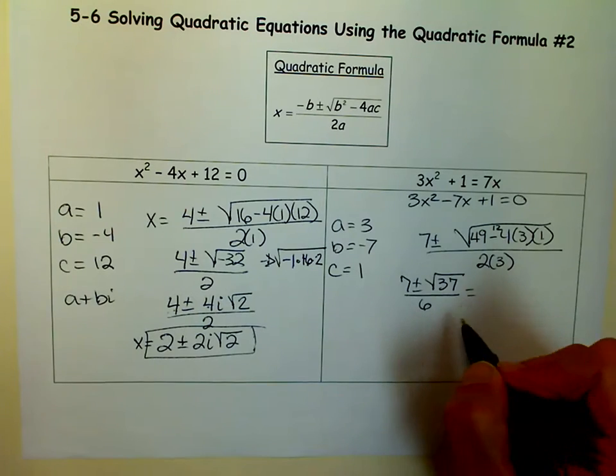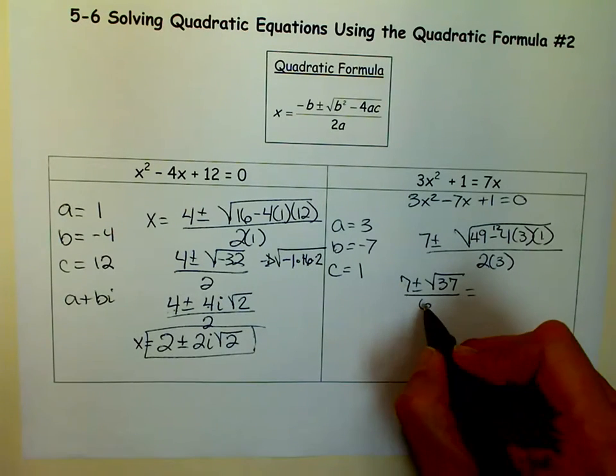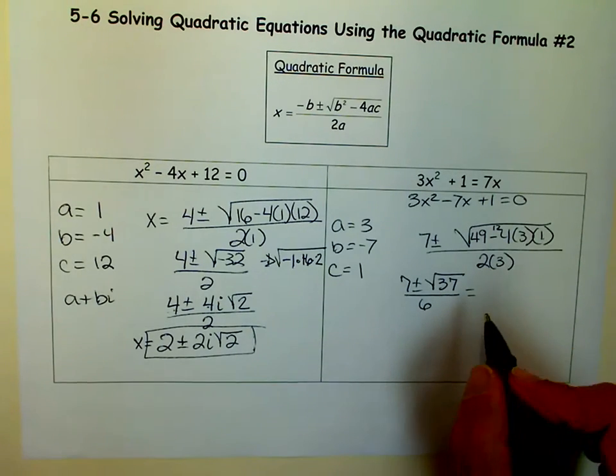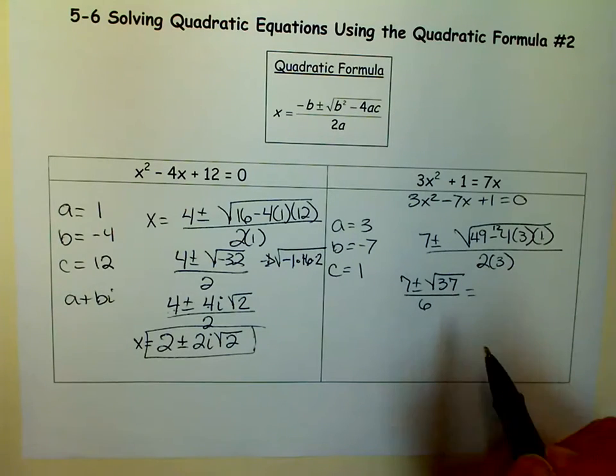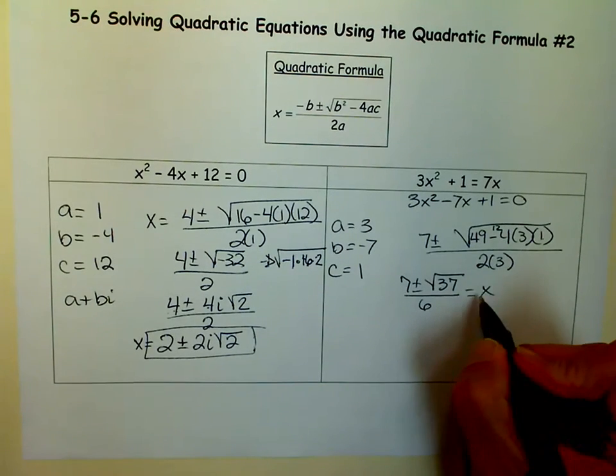And that's all I can do. I can't really simplify it anymore. There's nothing that reduces. 37 is a prime number. So that is my answer. That is what equals x.